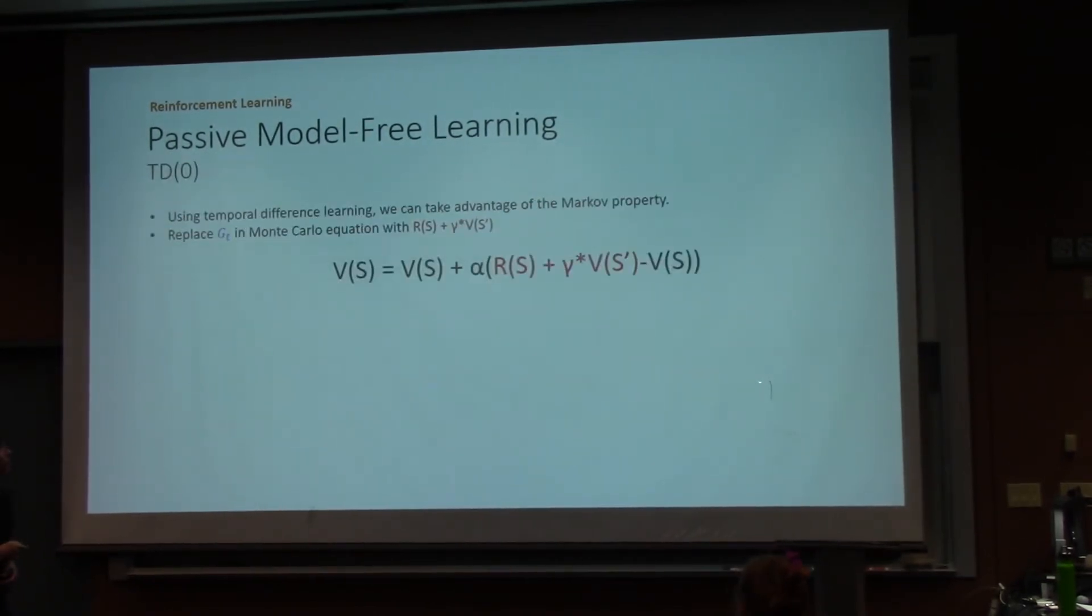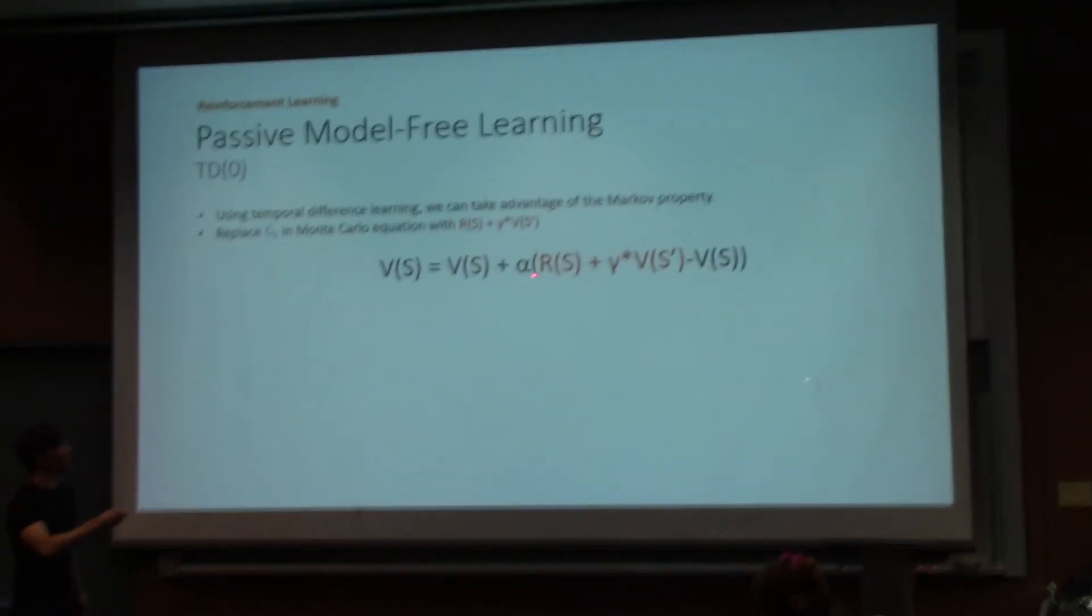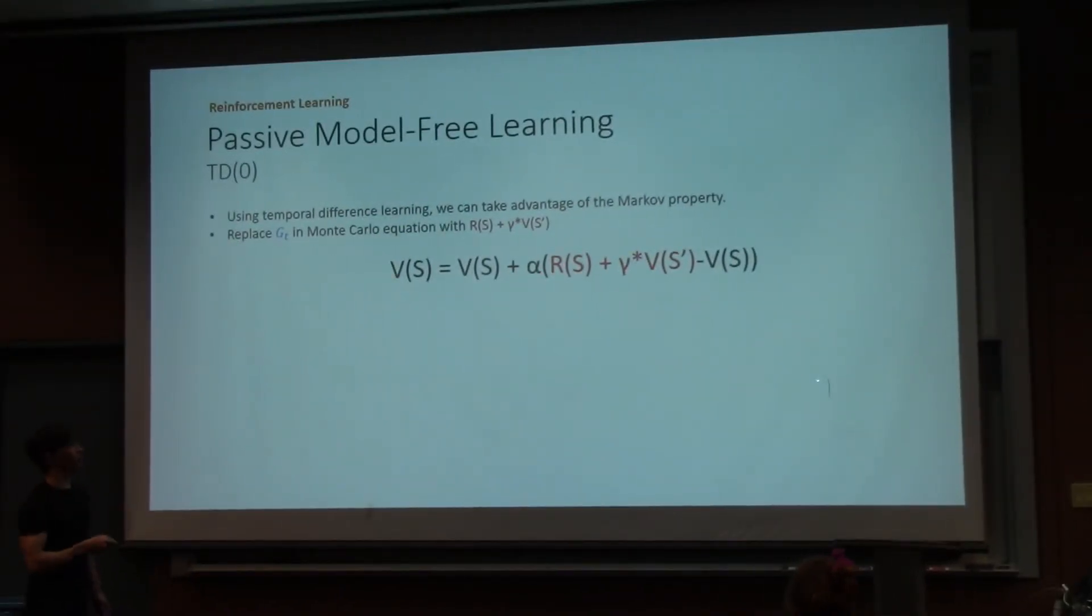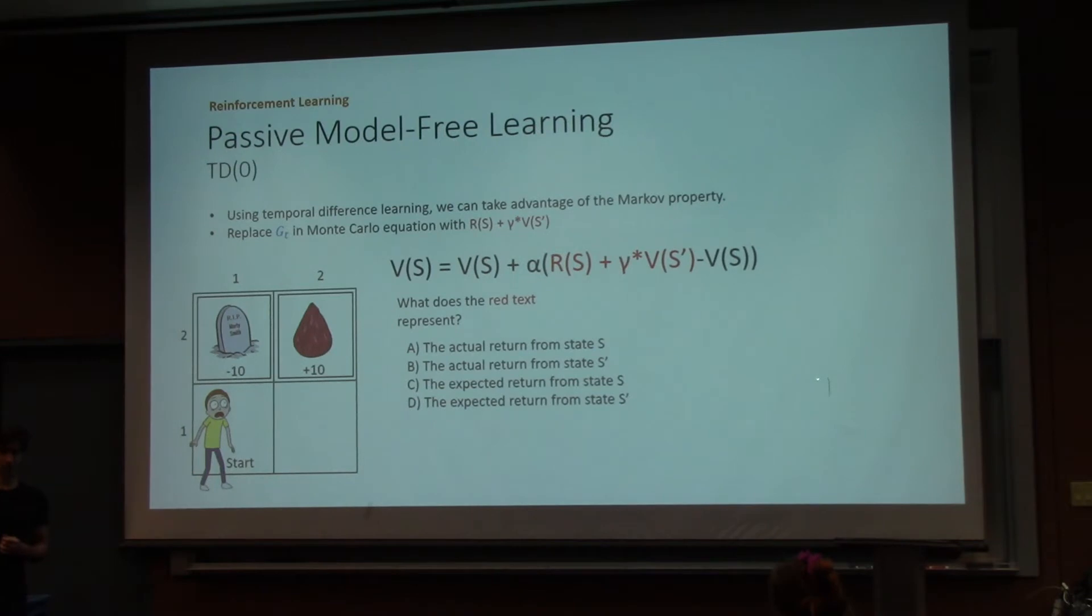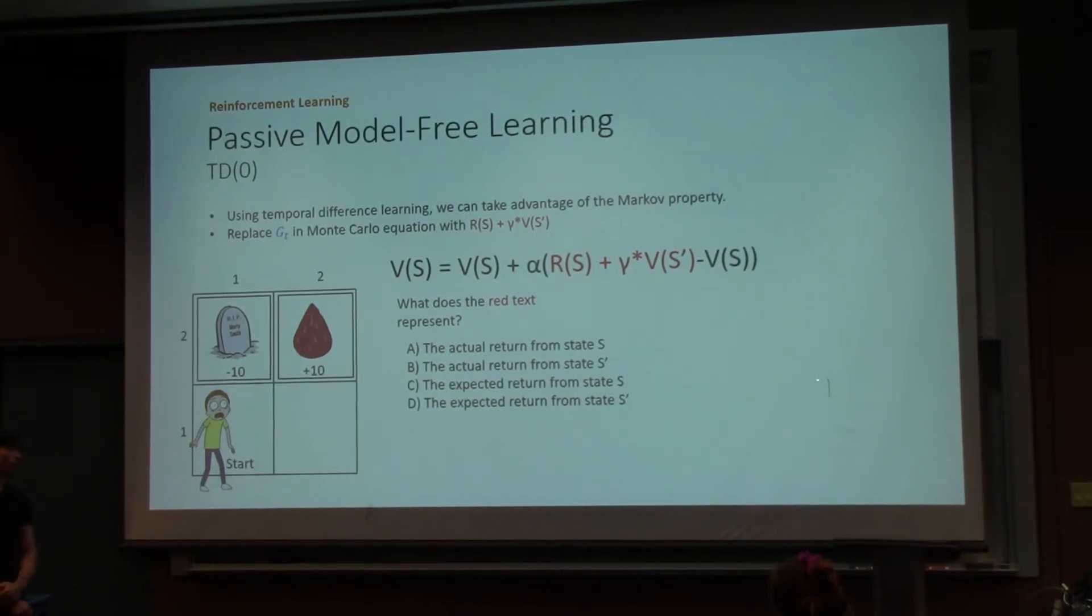And all we have to do is take the equation that we just had there for our incremental Monte Carlo method and replace it with this value. So before, we had G_T, which was the return that we would expect to get, which is the actual return that we got from some state to the end of the episode. So now we're replacing it with this red text. So my question to you is, what does the red text represent? I'll give you guys a few seconds of this.